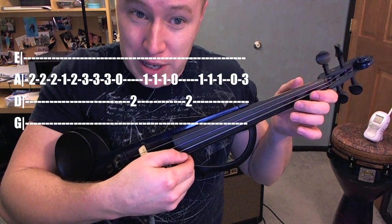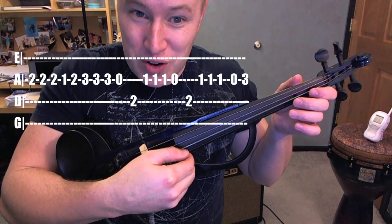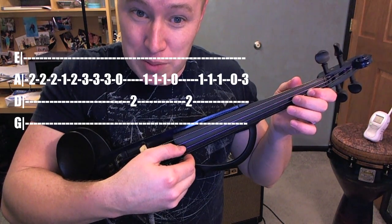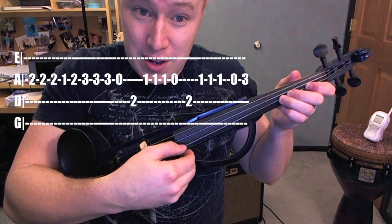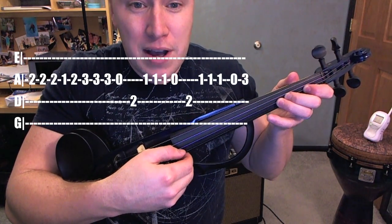When you see a zero, it means I'm playing the open string. When you see a one, I'm using my first finger. Two is my second finger, three is third finger. You'll see a five later on - that's when I'm using my pinky and I'm extended out.